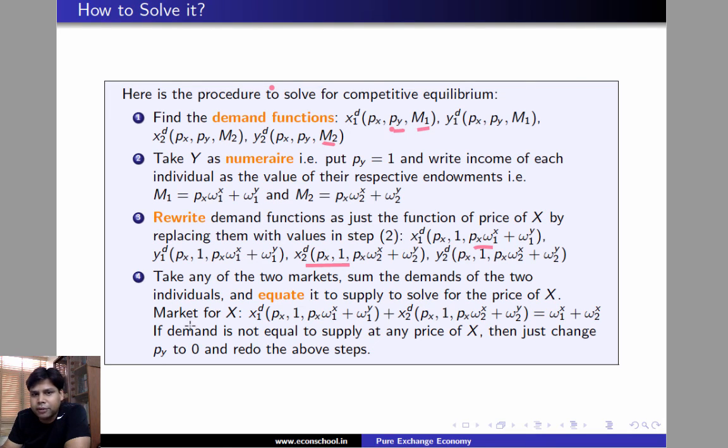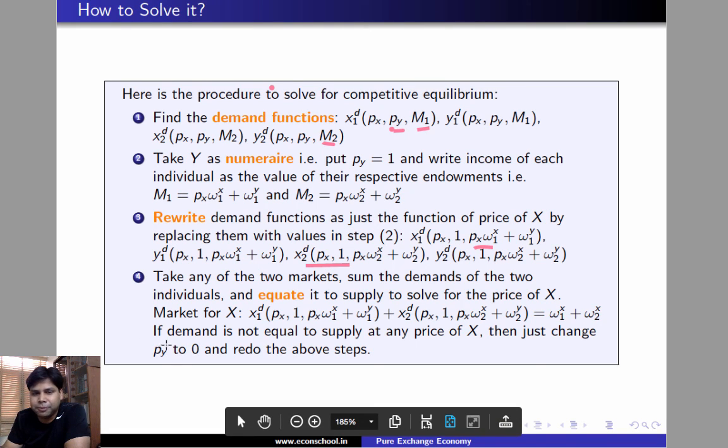If it turns out that demand is not equal to supply at any price of X, then we just inspect at one other case where PY is 0 and check if in competitive equilibrium PY is 0 or not. So, the procedure tells us that all that you need to do is you just need to check for two values of PY. One is 0, one is 1 because PY equal to 1 will take care of any possibility where PY is strictly positive because of the numeraire result and PY equal to 0 must be dealt separately.